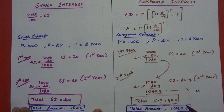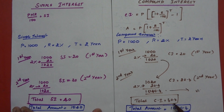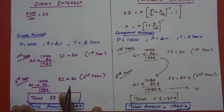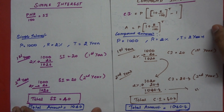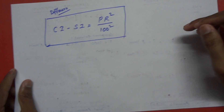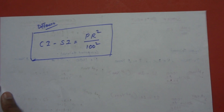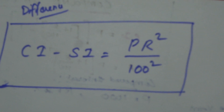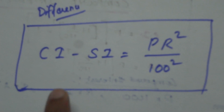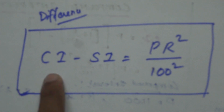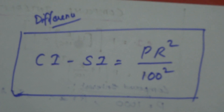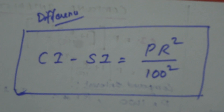Total CI is 40.4 and total amount is 1,040.4. So this is the difference between simple interest and compound interest. If you are asked the difference, CI minus SI equals PR squared divided by 100 squared. Thank you.